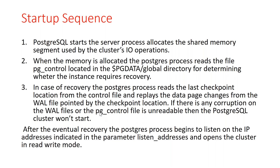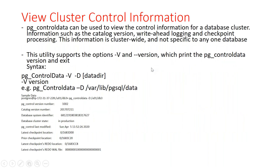In case of recovery, the Postgres process reads the last checkpoint location from the control file and replays data changes from the WAL file pointed to by the checkpoint location. There is no multiplexing of the control file and WAL files. If there is any corruption in WAL files or the pg_control file is unreadable, the cluster will not start. A participant asks if we can recreate the control file, and the instructor confirms yes.